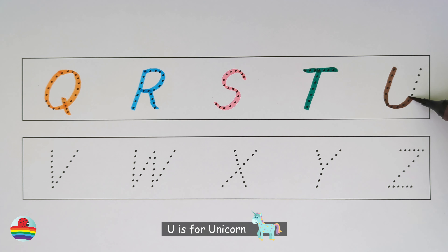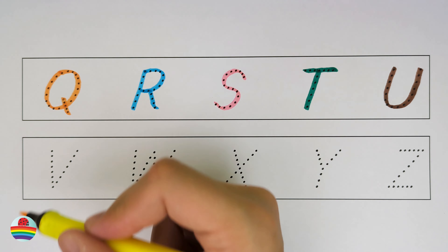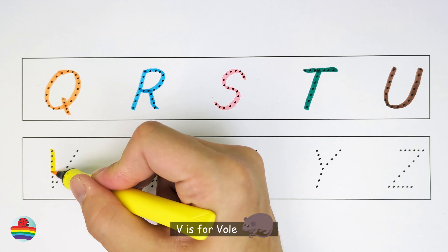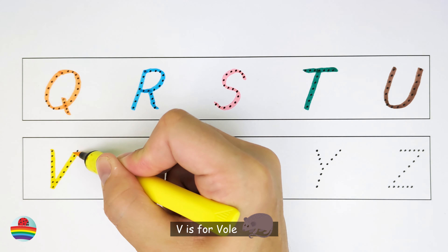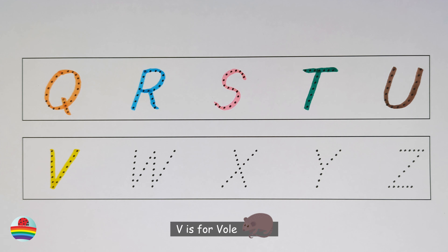U. U is for unicorn. U. V. V is for vulture. V.